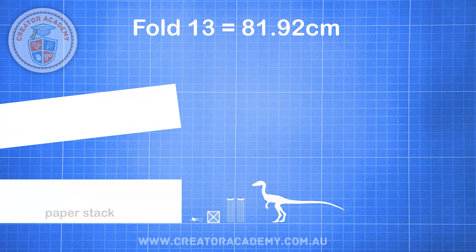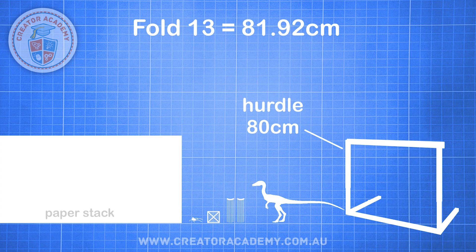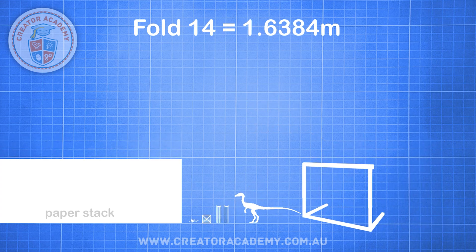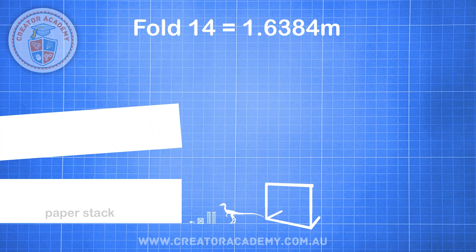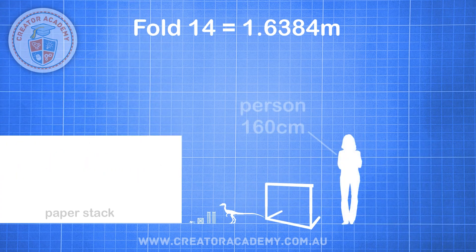You're going to need some heavy machinery to help you make fold 13, which takes your stack to a respectable height of 80 centimetres, about the height of a hurdle. On your 14th fold you barely recognise your piece of paper anymore, because now it is 1.6 metres tall, or the height of an average adult.